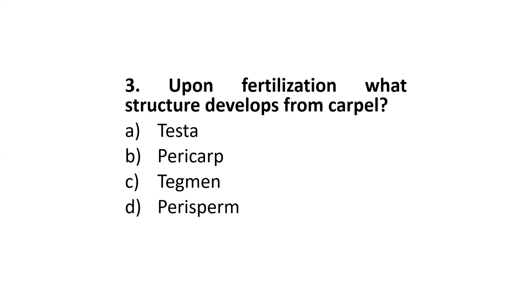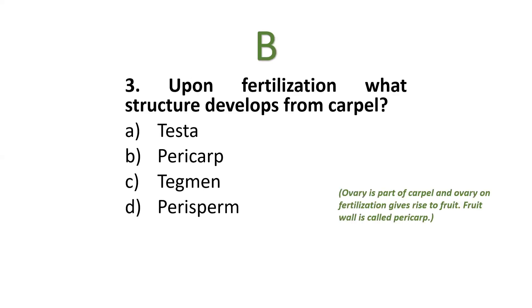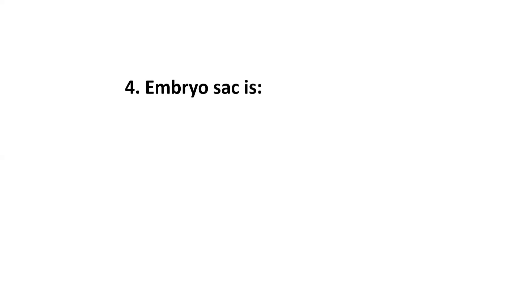Next: upon fertilization, what structure develops from carpel — testa, pericarp, tegment, or perisperm? The correct option is pericarp. The significant detail here is that the ovary is part of the carpel, and the ovary on fertilization gives rise to the fruit, and the fruit wall is called pericarp.